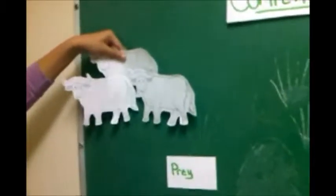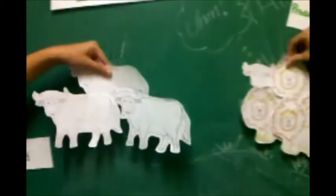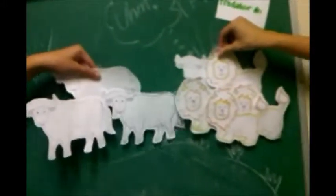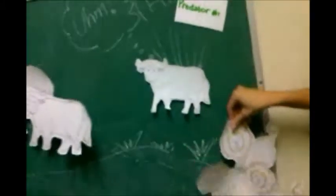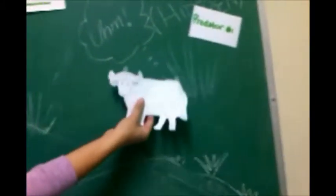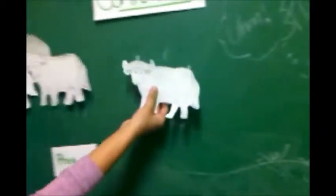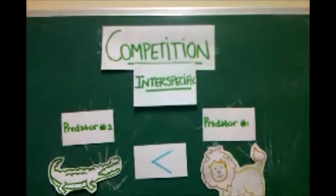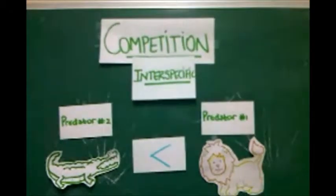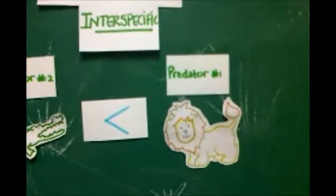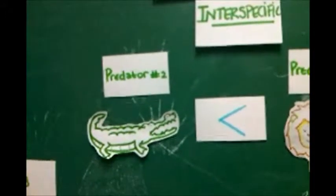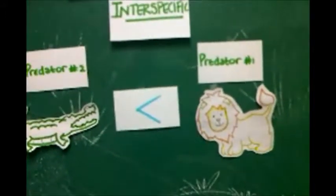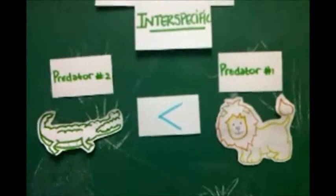They both fight for the buffalo, and the lion wins and pulls the buffalo out of the water. The herd of buffaloes sees what's happening and comes in, scares off the lion, and then the buffalo gets free and goes back with the herd. So in this project, we can conclude that interspecific competition between predator number one, the lion, is superior over predator number two, the alligator, because it won the food, which was the buffalo.